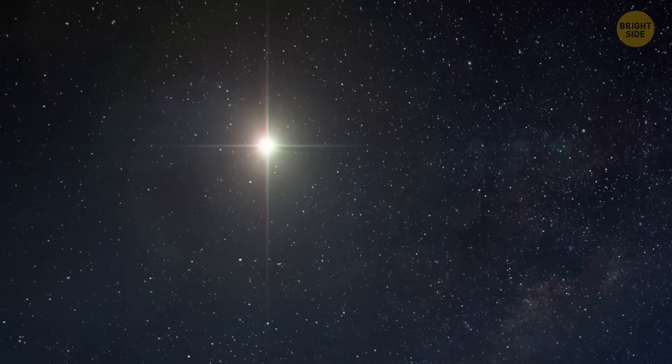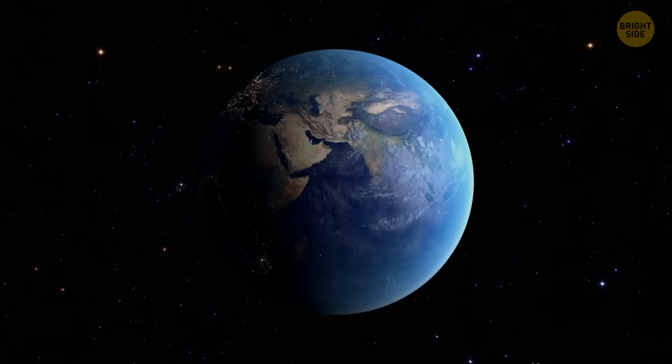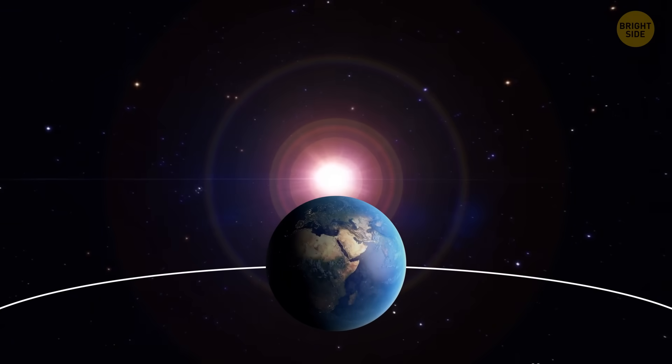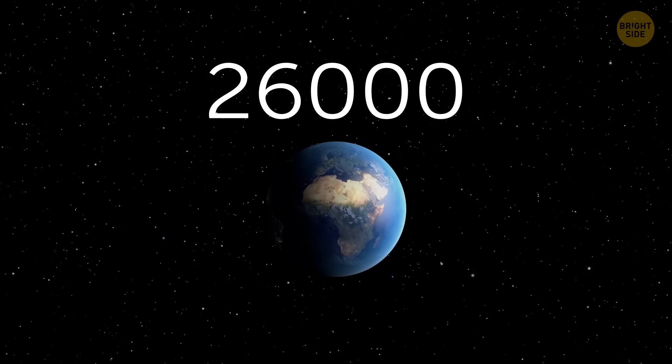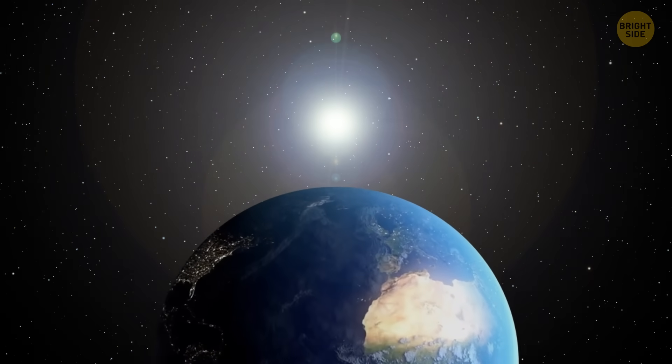Vega is also a pole star, although not at the moment. Right now, Earth's axis points toward Polaris, the north star. But Earth's axial tilt draws a circle over 26,000 years, and Vega will again be the pole star in about 12,000 years. Just you wait.